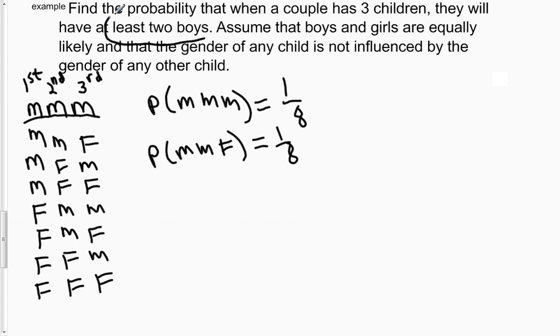So what we want to do is we want to look at all of the outcomes over here that have at least two boys and make the ratio of that number to eight because there's eight total outcomes. And of those eight total outcomes, the number that fit the criteria of having at least two boys is what we're going to count. So let's see how many of these outcomes have at least two boys.